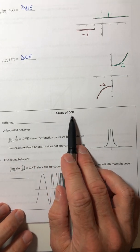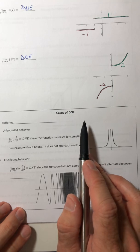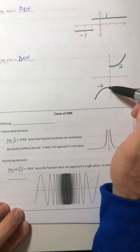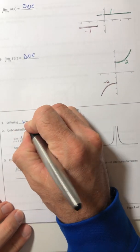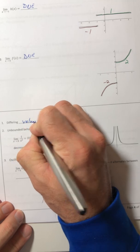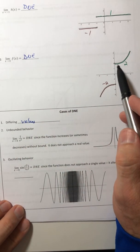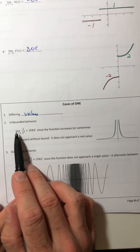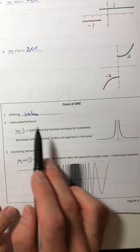So let's look at cases of when the limit does not exist. So I've seen one of them is when you have differing values. So they don't approach the same value or same number.